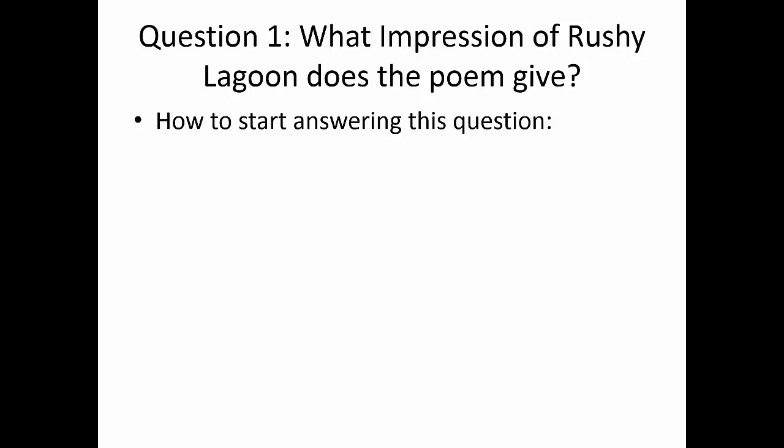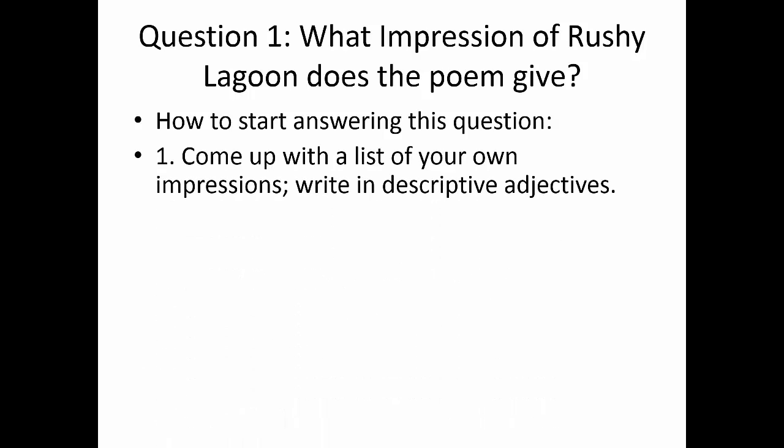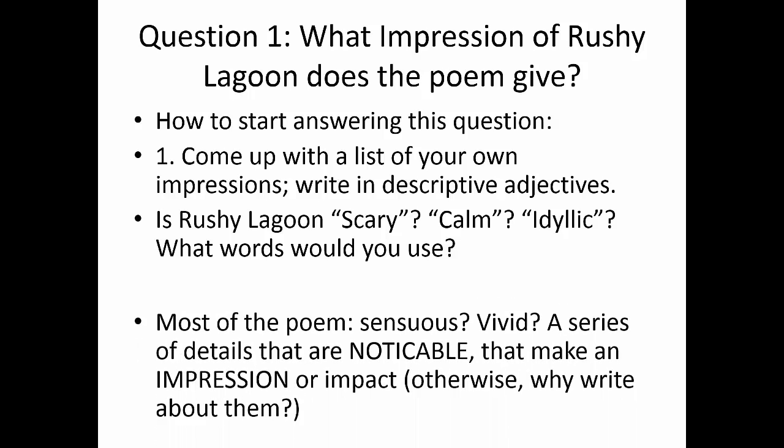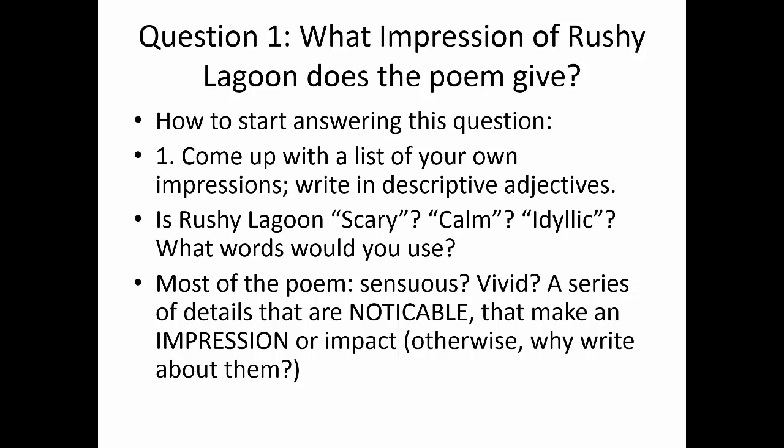What is the overwhelming impression given by the whole? What do all of these little individual impressions add up to? How do you start answering in an AST context? Come up with a list of your own impressions — write in descriptive adjectives. Does this place, Rushy Lagoon, seem to you to be scary, calm, idyllic? Is it sensuous? Is it vivid? A series of details that are noticeable, that make an impression or an impact — otherwise, why write about them?